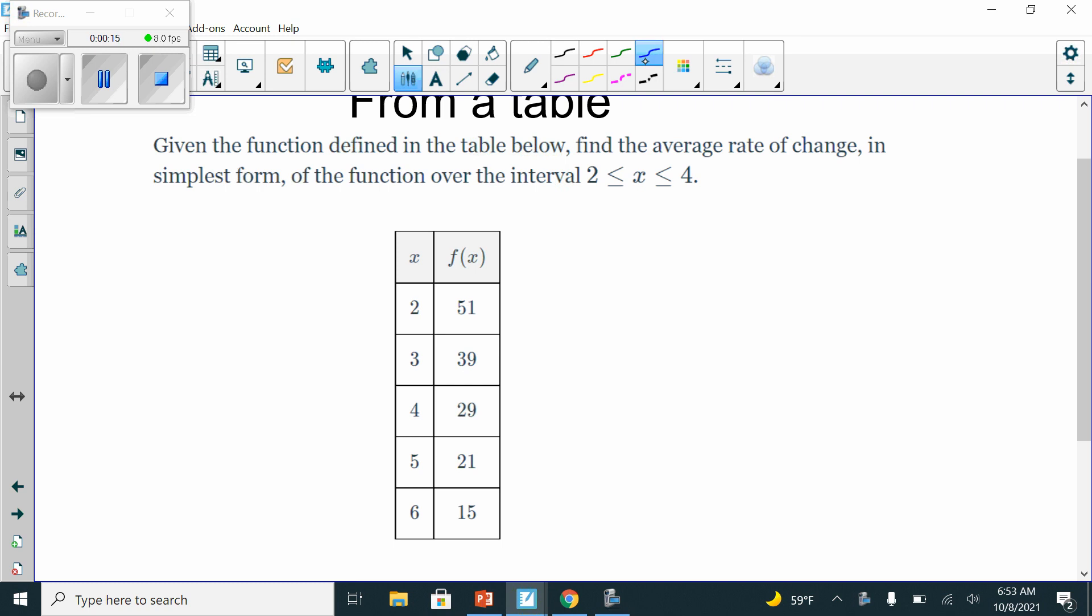So they're asking us to look at the interval from 2 to 4. Here's 2 and here's 4. We don't really care about any of the other numbers. I'm going to call this x1, y1. I'm going to call this x2 and y2. So the first thing is identifying what your x1, y1, x2, y2 are.